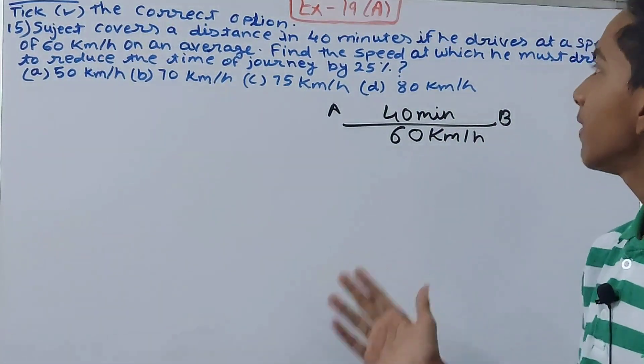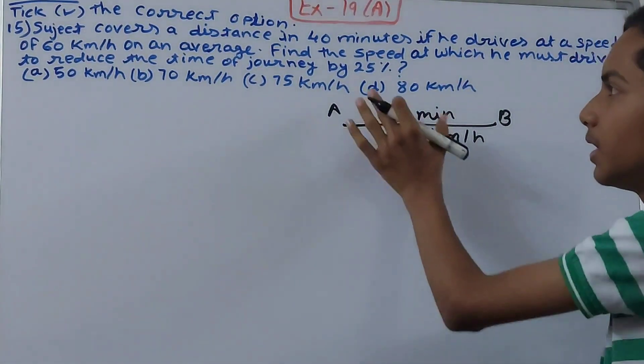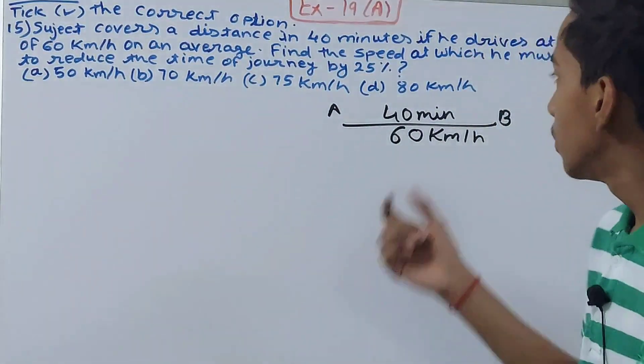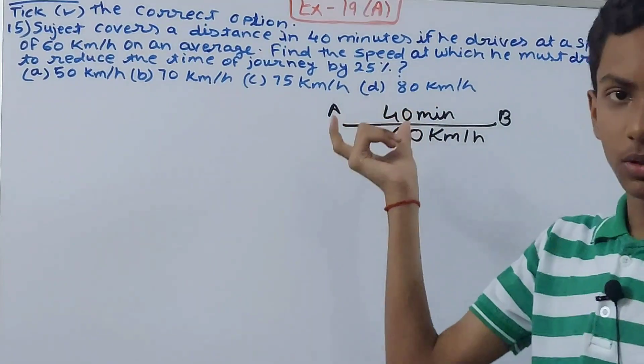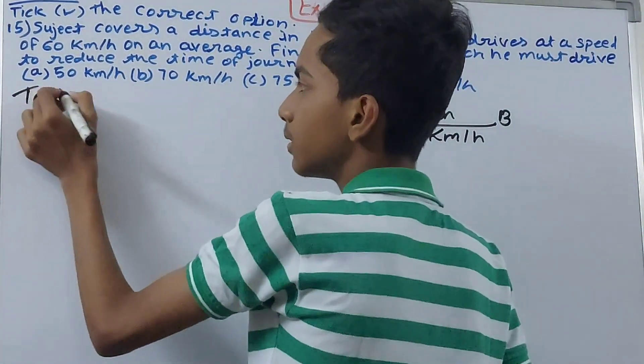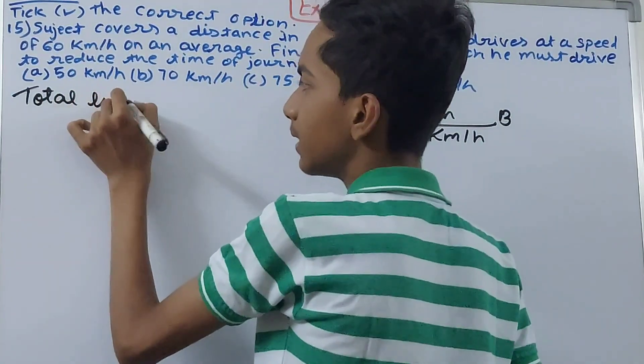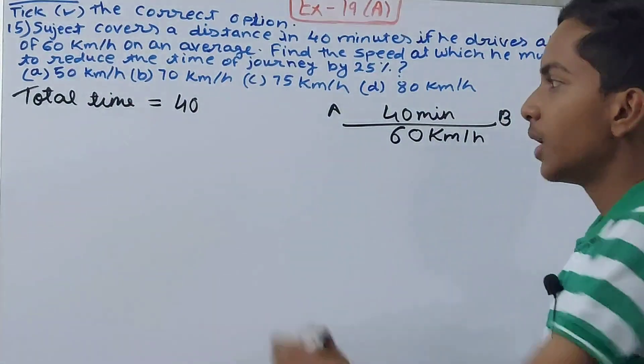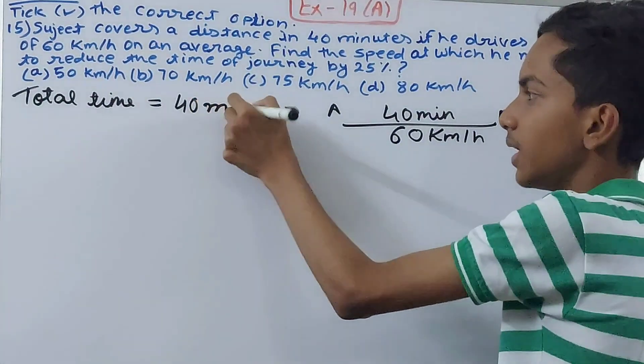Now it says that if we have to reduce the time of the journey by 25%, 40 minutes is the total time. We know the total time is 40 minutes that it took Sujit in the very beginning to go from the starting to the very end.